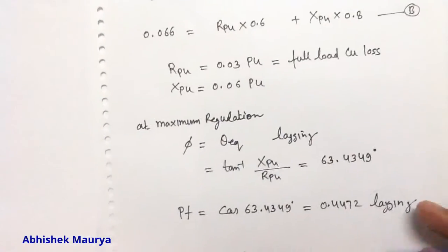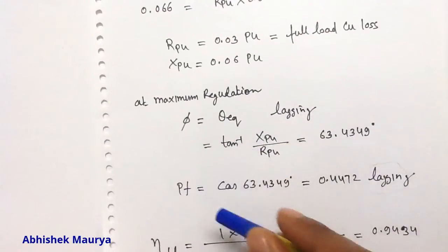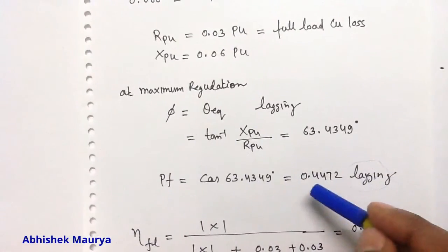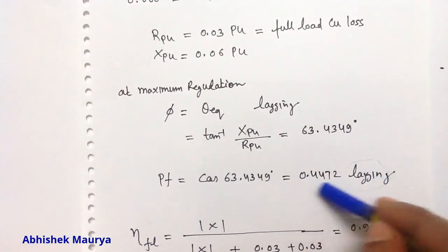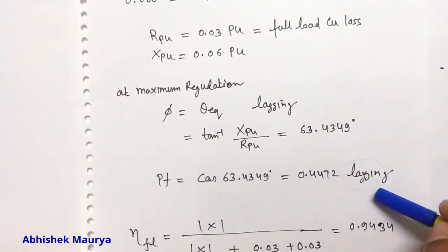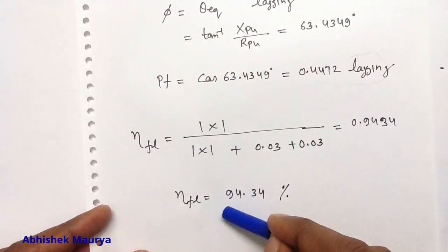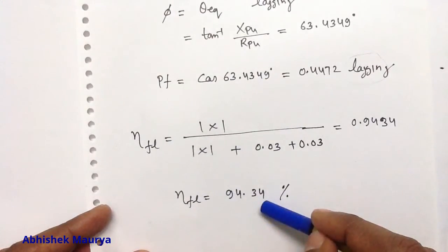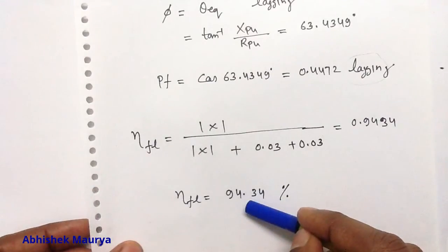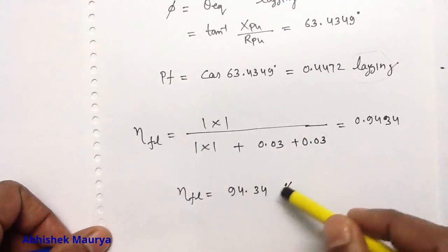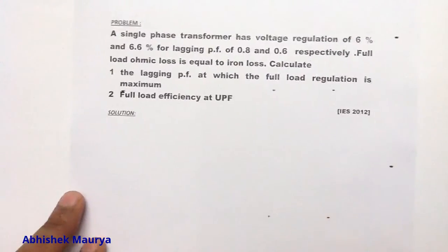We have got the power factor at which maximum regulation occurs: the value is 0.4472 lagging, and at this lagging power factor the voltage regulation will be maximum. In the second part, the efficiency at full load at unity power factor is 94.34%. In this way we have solved this problem.